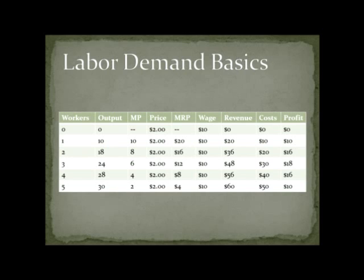The sixth column is the wage, which is a constant $10. Revenue is simply the price of output times the amount of output: if I hire one worker, I produce 10 units at $2 each, that's $20; two workers gives 18 units at $2, that's $36; three workers gives 24 units at $2, that's $48. Cost is simply the number of workers times the wage — I'm assuming away fixed costs like capital, and even if I added them in they'd be constant and wouldn't change the solution. So one worker costs $10, two workers costs $20, and so on.